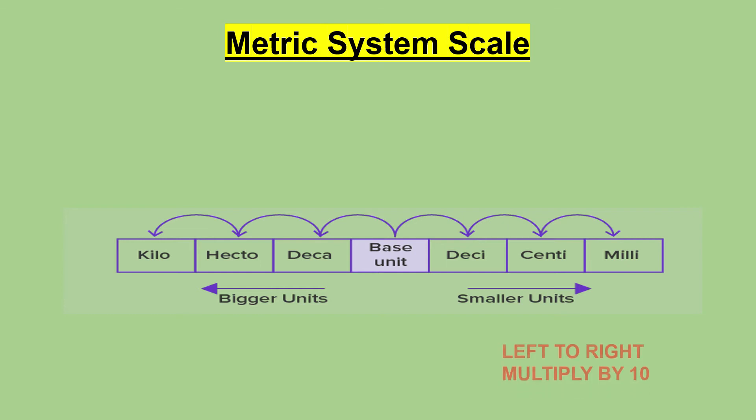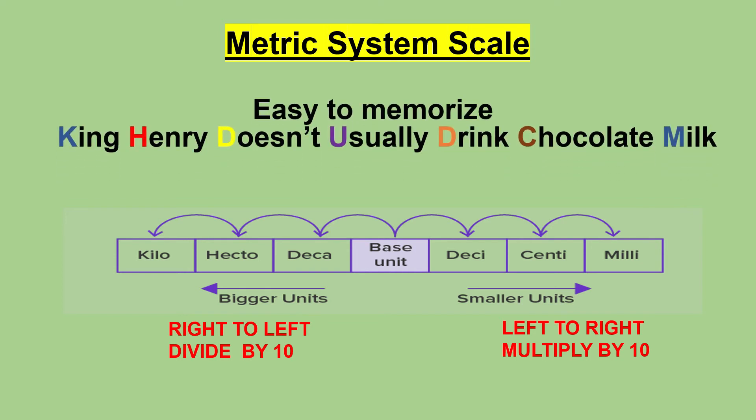Each unit is 10 times bigger than the unit immediately on its right and 10 times smaller than the unit immediately on its left. That is exactly the same pattern that the number places use in our decimal number system.